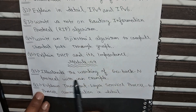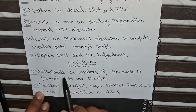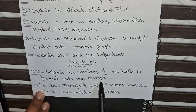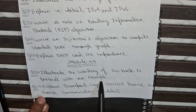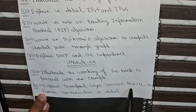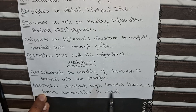The first question of Module 4 is: Illustrate the working of the Go-Back-N protocol with an example. The second question is: Explain transport layer service, process-to-process communication, and data transfer in detail.